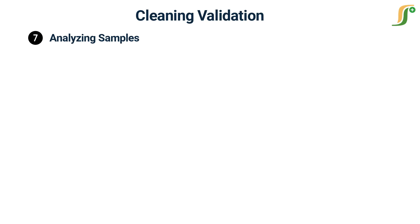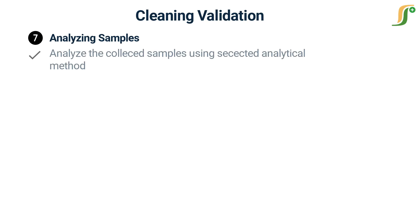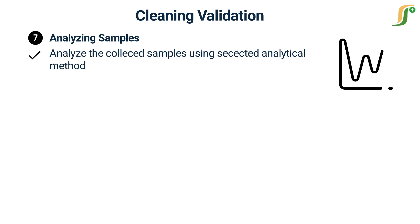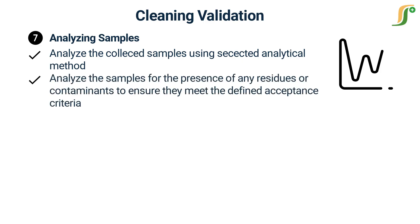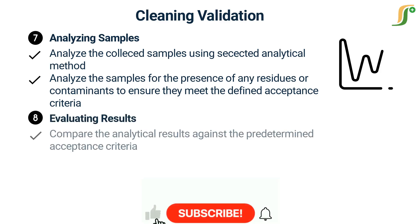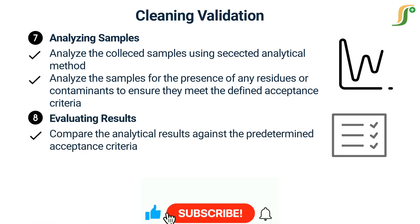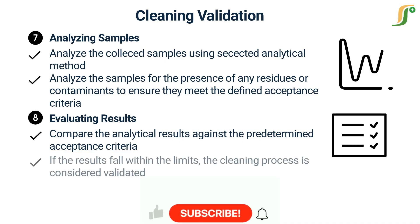Step 7: Analyzing samples. The collected samples are subjected to rigorous analytical testing using the selected methods. We analyze the samples for the presence of any residues or contaminants to ensure they meet the defined acceptance criteria. Step 8: Evaluating results. We compare the analytical results against the predetermined acceptance criteria.